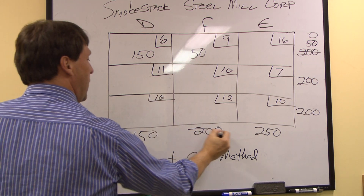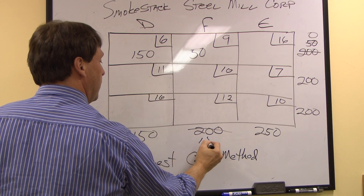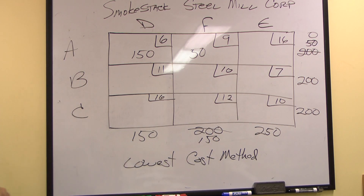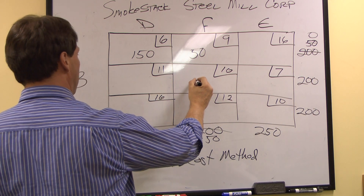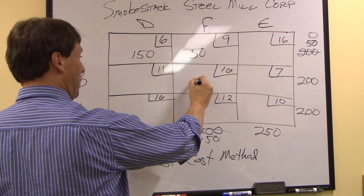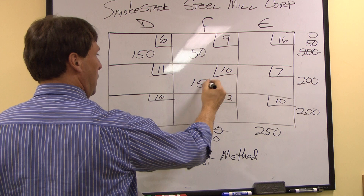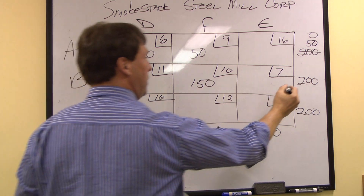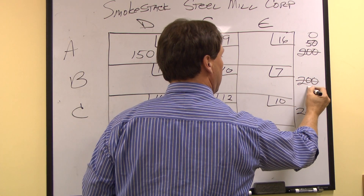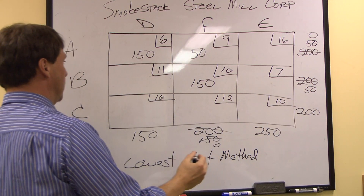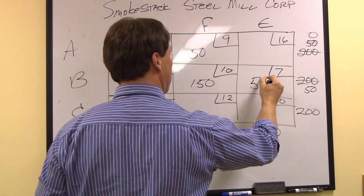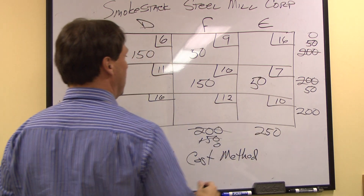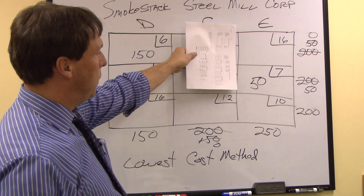I still have a demand from Fort Worth for 150 units. My next lowest shipping cost is from Birmingham, which brings Birmingham's supply down to 0 and Fort Worth's remaining demand down to 50. For Birmingham, my next 50 units go here, so I've satisfied Fort Worth.